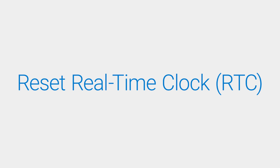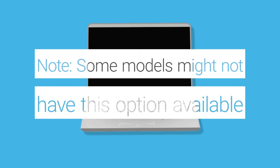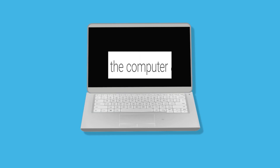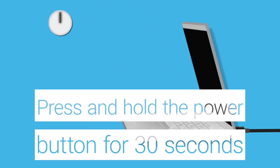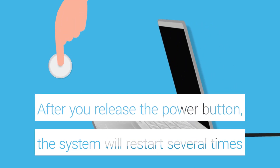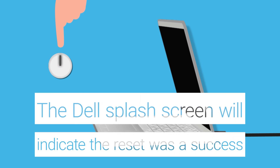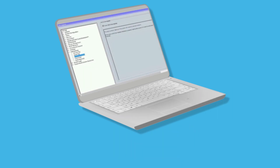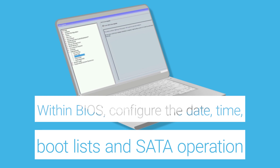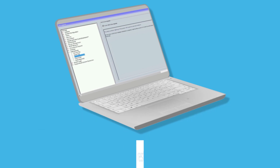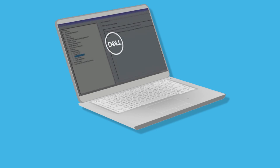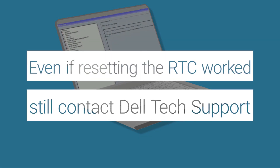Try resetting the real-time clock on your PC. Please note that not all models have this option available. Turn off the computer, but make sure the system is connected to a power outlet. Press and hold the power button for 30 seconds. After releasing the power button, the system should restart several times. Once the reset is complete, the system will reboot. The Dell splash screen will indicate that the reset was successful. Now tap the F2 key repeatedly to enter the BIOS. Within BIOS, configure the date, the time, the boot lists, and the SATA operation. After you've completed these configurations, try restarting your PC. If resetting the real-time clock worked, you should still contact the Dell tech support agent and explain the situation to them.